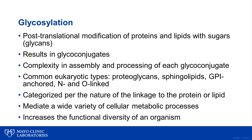The central dogma of biology is that information flows from DNA to RNA to protein. But how does the relatively small number of genes in the human genome generate the vast biological diversity and complexity that is seen in the human population? Well, one reason is glycosylation.